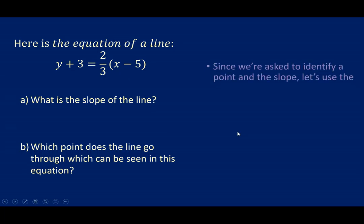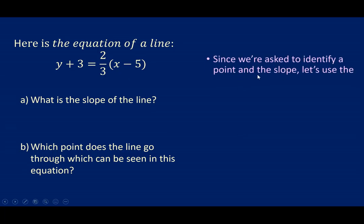Now, since we were asked to identify a point and the slope of the line, let's use the point-slope formula. That's why it's named the point-slope formula, because you can easily look at it and identify your x1 and your y1 and your slope.